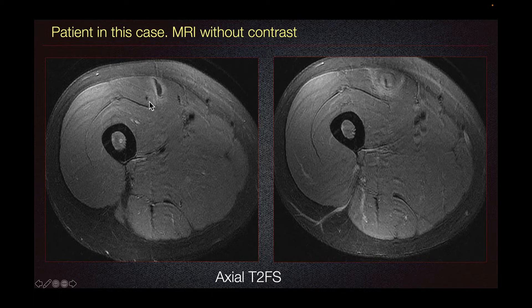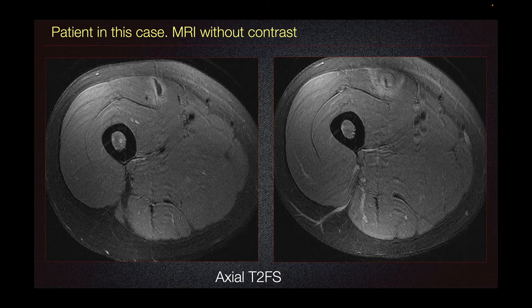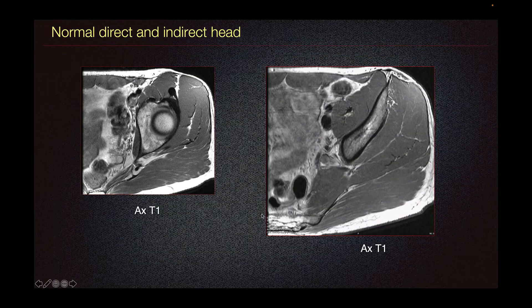Here on our axial T2 fat sat imaging, we can see some edema predominantly involving the inner muscle belly of the rectus femoris. These findings are consistent with likely subacute low-grade strain of the rectus femoris.